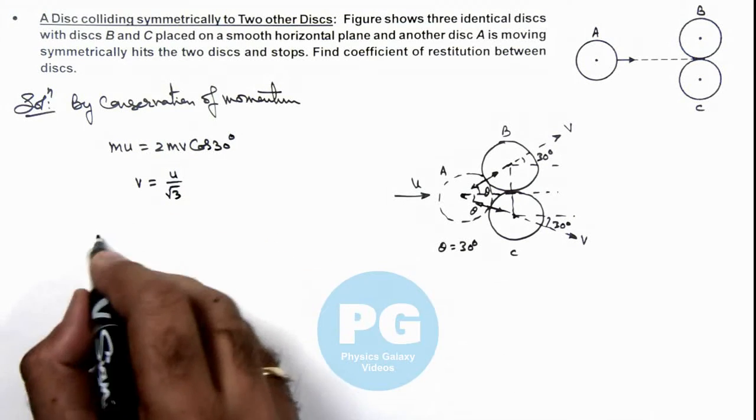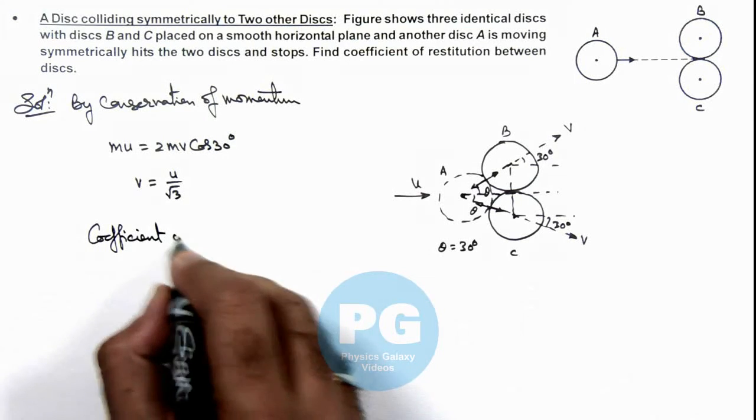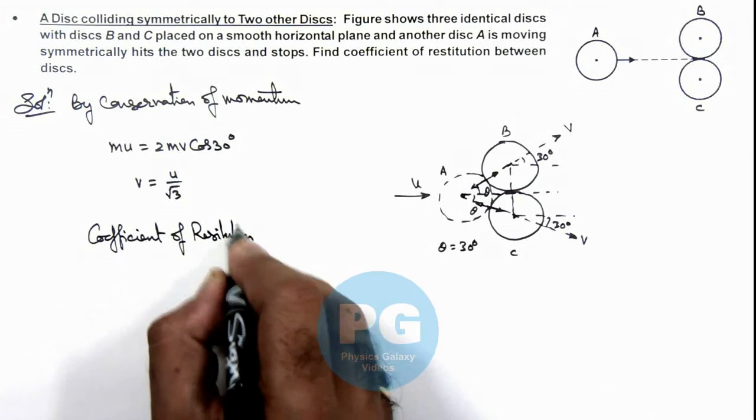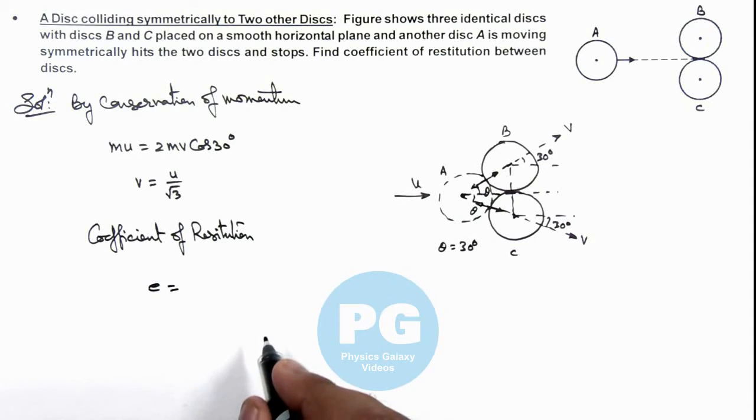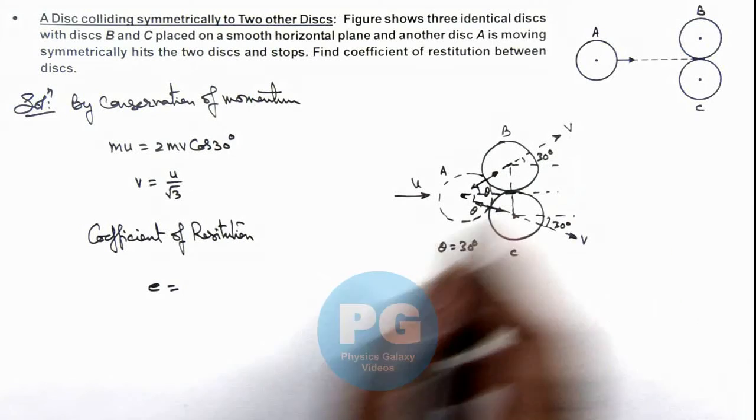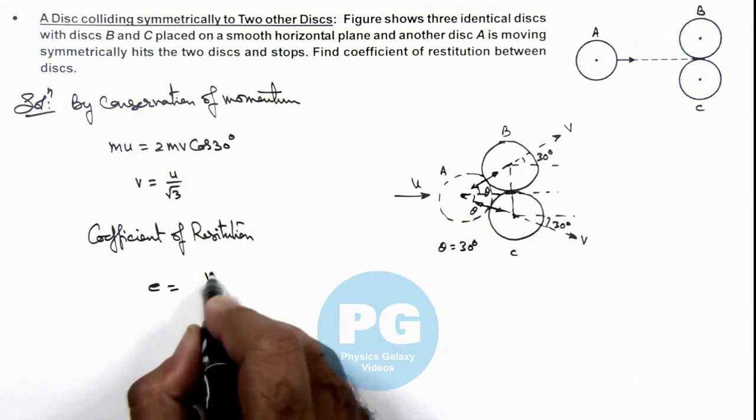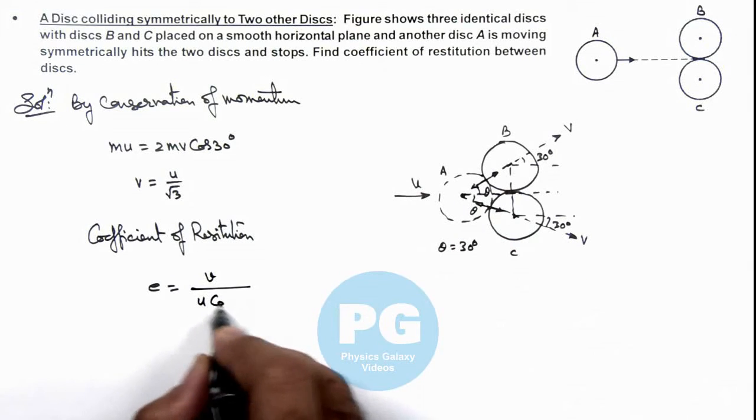If we calculate the coefficient of restitution, we know it is calculated along the line of impact as the ratio of separation velocity to approach velocity. The value of e along the line of impact: the separation velocity between A and B is v, divided by the approach velocity which was u*cos(30 degrees).